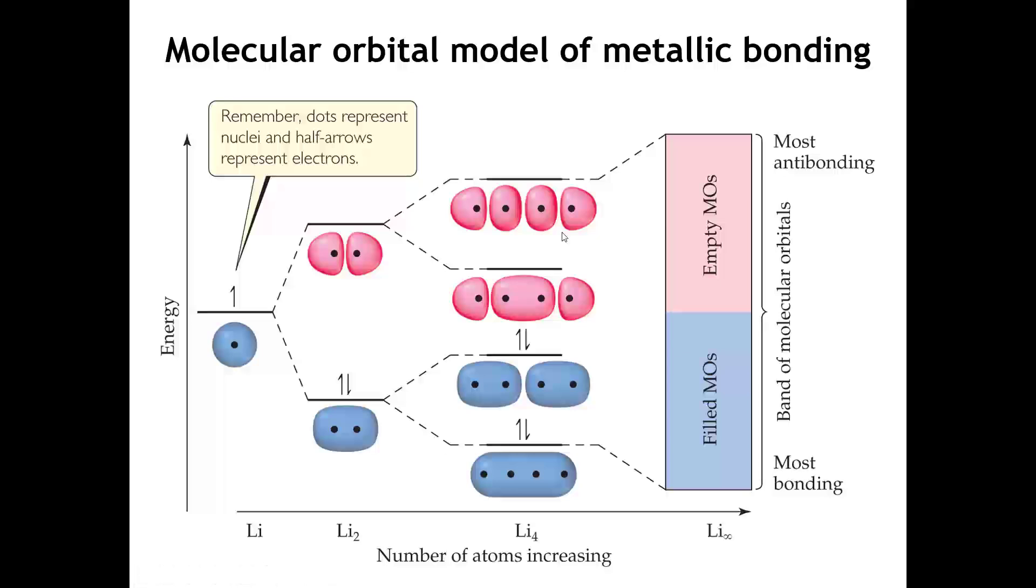And this will continue as we go from four atoms to eight atoms to 100 atoms to 1,000 atoms to 1,000,000,000 atoms. But the other feature that's common is because each lithium atom has one valence electron, we'll always have just the right amount of electrons to fill up the molecular orbitals that are more bonding than antibonding. Those are the ones shown in blue. And we'll leave the more antibonding orbitals empty.